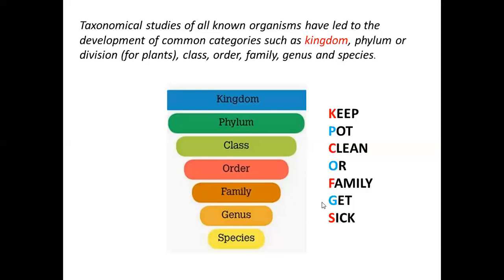In your exam needs, questions come from this chapter. In your first unit, there are 7 to 17 questions across 3 chapters. So keep this sentence in your mind. Questions may ask you to identify the correct order — like kingdom, phylum, class, and all the way to species. If you have memorized this sentence, you will be able to remember all these things. So the sentence is: 'Keep pot clean and family get sick.'